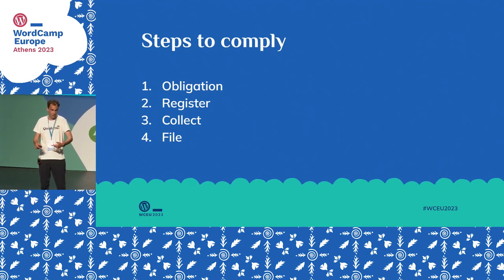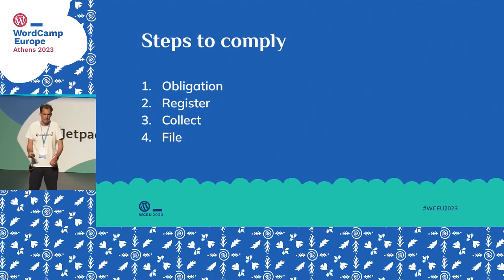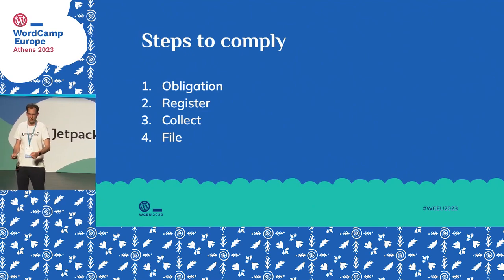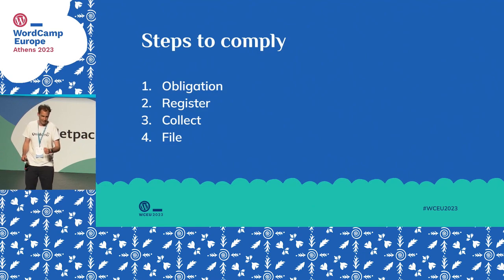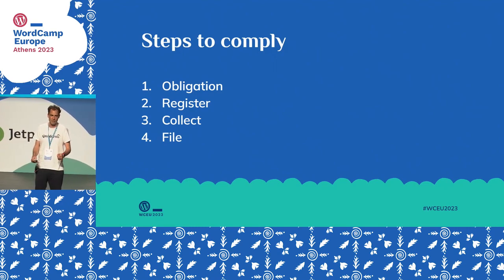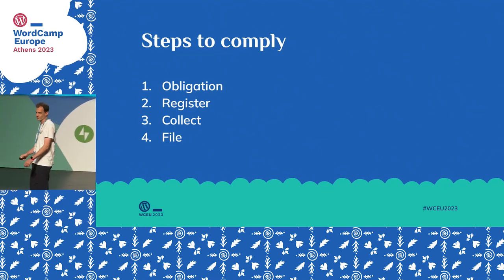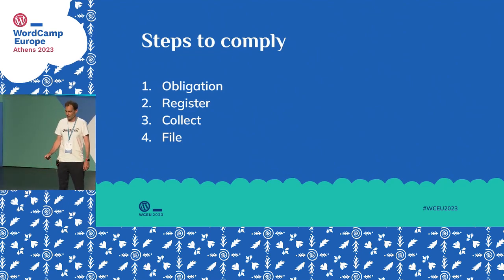Registration itself, if you have the obligation to do so, is usually quite easy. You fill out a form and then you get a tax ID. With this tax ID, you can start collecting taxes. It's very important never to start collecting taxes before you have registered in the tax jurisdiction in question, because that would be illegal. And then the fourth step: you have to file all the taxes you have collected.